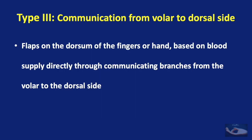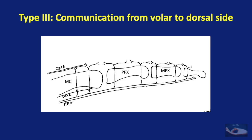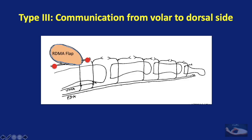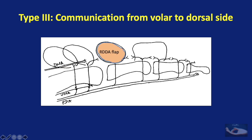Some flaps on the dorsum of the fingers or hand are based on blood supply through communicating branches from the volar to the dorsal side. There is no proper digital vessel on the dorsal side of the finger; however, there is a series of vessel anastomoses based on communications from the proper digital artery on the volar side. These communicating branches are regular and located at the neck and base of the middle phalanx, neck and base of the proximal phalanx, and between the heads and necks of the metacarpals. Examples of flaps based on these communicating branches include the reverse dorsal metacarpal artery flap, the Quaba flap, the reverse dorsal digital artery (RDDA) flap, and the classical cross finger flap.